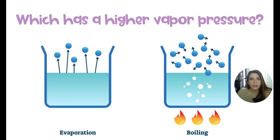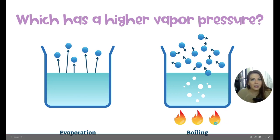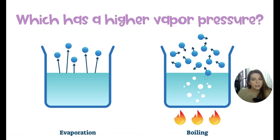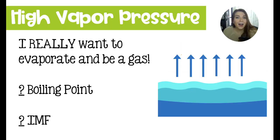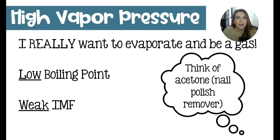Take a second to think about which has a higher vapor pressure: a substance that is evaporating or a substance that is boiling. The substance that is boiling has a higher vapor pressure because theoretically it would have a lot more heat added to it, which increases the temperature and in turn increases the vapor pressure. They have more energy to push up against the atmosphere. A high vapor pressure indicates that the substance really wants to evaporate — these substances are going to have low boiling points, meaning they don't need a lot of energy to boil. They boil quite easily, which is the result of a very weak intermolecular force.